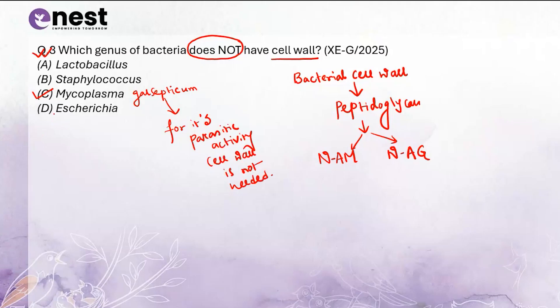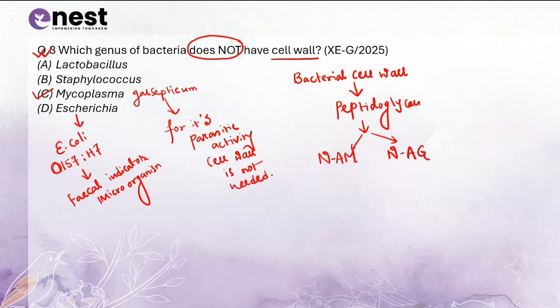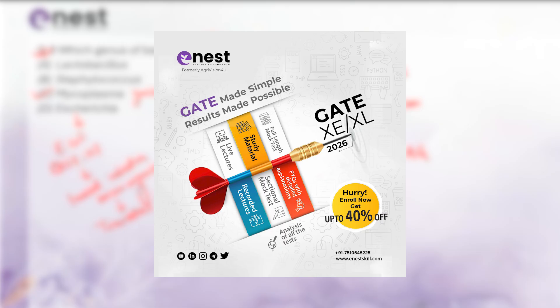One more thing to remember: for Escherichia coli, the specific strain is O157:H7, according to flagellar movement. It is basically a fecal indicator microorganism, which can cause traveller's diarrhea. So E. coli O157:H7 is an index organism for fecal contamination. In question 3, Mycoplasma gallisepticum does not have any cell wall due to its parasitic activity. The correct option is option C.